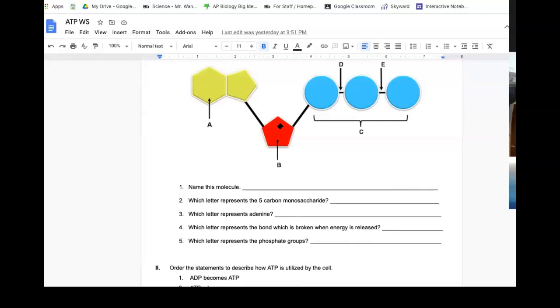Adenine is our nitrogenous base. Remember during nucleic acids, we talked about adenine, guanine, thiamine, cytosine. So here, the double rings in yellow, A is our adenine. And then letter number four, which letter represents the bond that will be broken? So these are our phosphates. So we really have to choose between D and E. And hopefully it makes sense that it's easier to break off the end piece than it is to break off a middle piece, right? So letter E will break and release a phosphate and at the same time release energy.